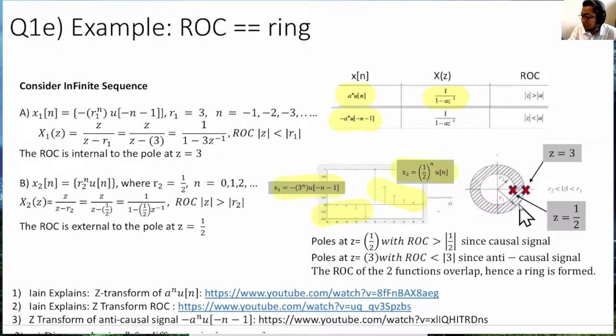So, the answer to this question is, what type of sequence will form an annular ring? And the answer is that it must be an infinite sequence. On the causal side, the pole will be sitting on radius at R2, and the anti-causal side will be radius R1.